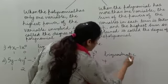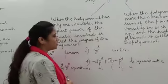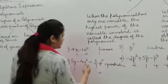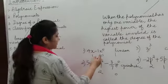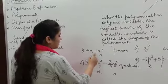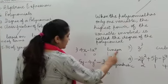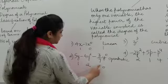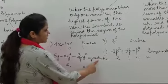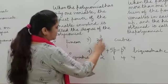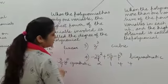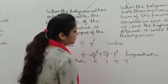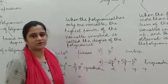To sum up: a polynomial of degree 1 is called a linear polynomial, a polynomial of degree 2 is called a quadratic polynomial, a polynomial of degree 3 is called a cubic polynomial, and a polynomial of degree 4 is called a bi-quadratic polynomial.